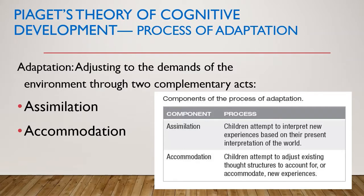Piaget's Theory of Cognitive Development includes the process of Adaptation, which means adjusting to the demands of the environment through two complementary actions. The first is Assimilation — children attempt to interpret new experiences based on their present understanding of the world. For example, when a child sees a baseball for the first time, they have experience with other types of balls. The new ball is assimilated into their already existing category, expanding their understanding that balls come in various sizes and colors.